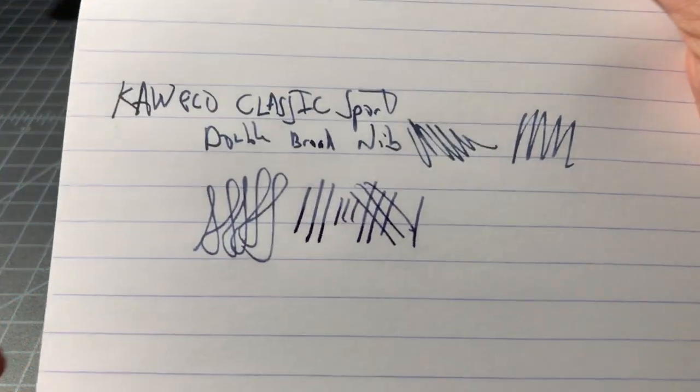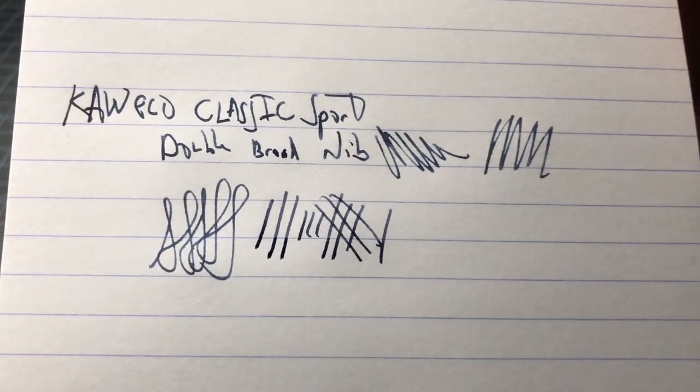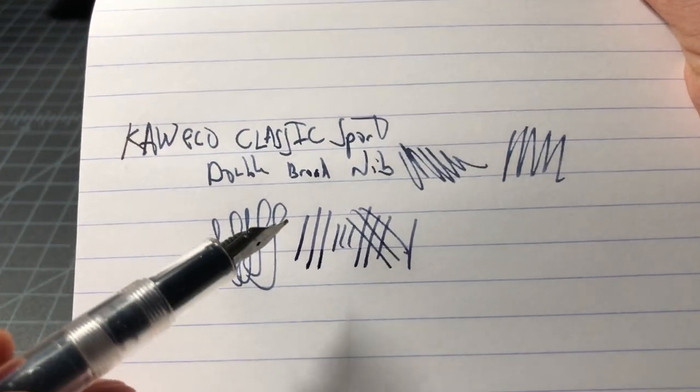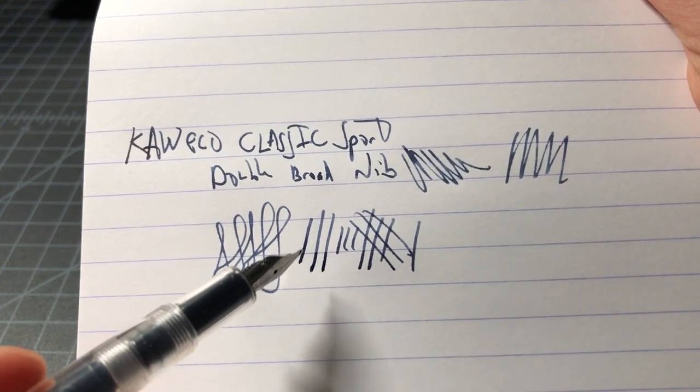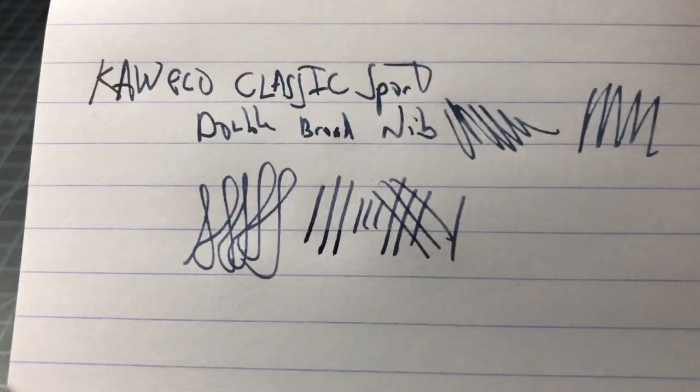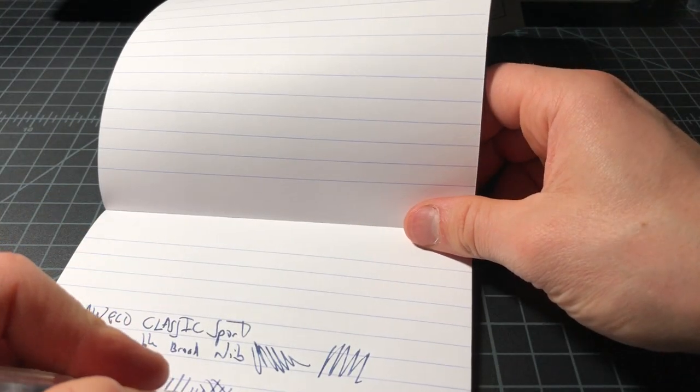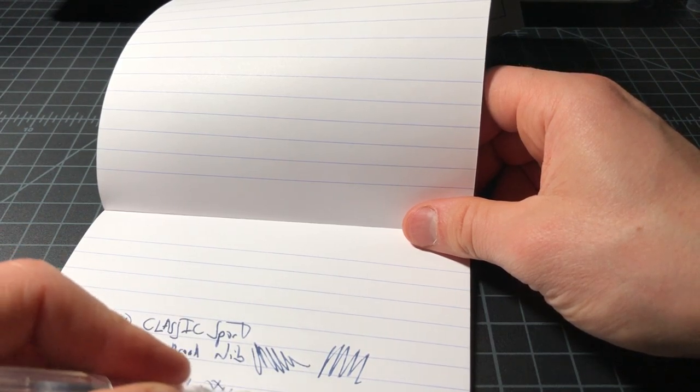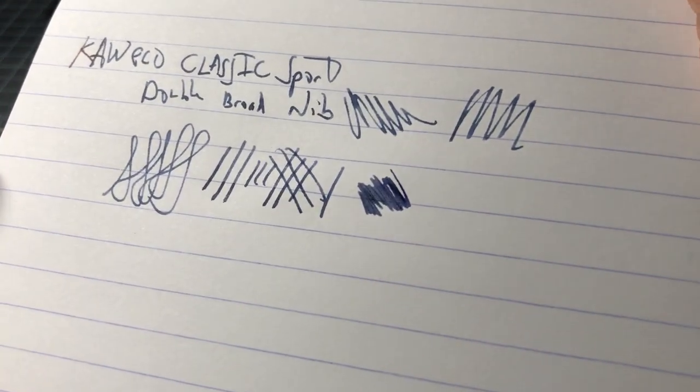It's a smooth writer. No problems there. But you're putting down a ton of ink. Not a lot of line variation. But you can see the variation as the ink collects at the bottom of the stroke. And that's just because you're putting down a lot of ink. So if you are happy with the color of your ink and how it works with your paper, you should get really nice results here.